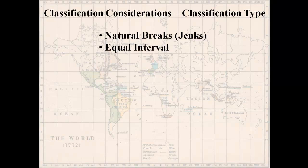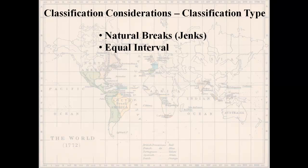Equal interval asks: what's the minimum value? What's the maximum value? Then it divides the total range by the number of classes and makes each interval that same size. You can think of this like grades in a course — intervals 10 points wide: 50–60 is an F, 60–70 is a D, 70–80 is a C, and so on. Each interval has the same width.